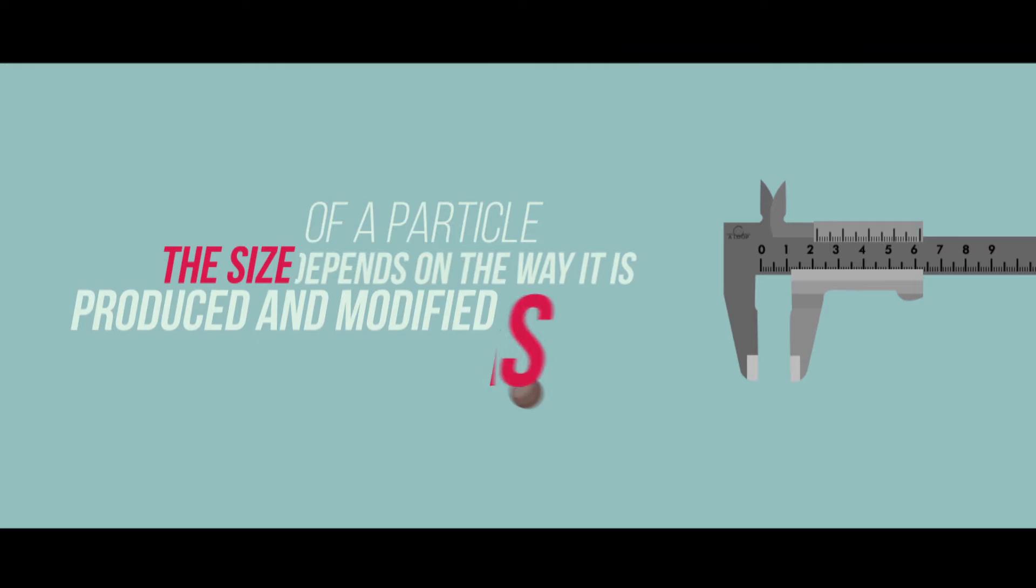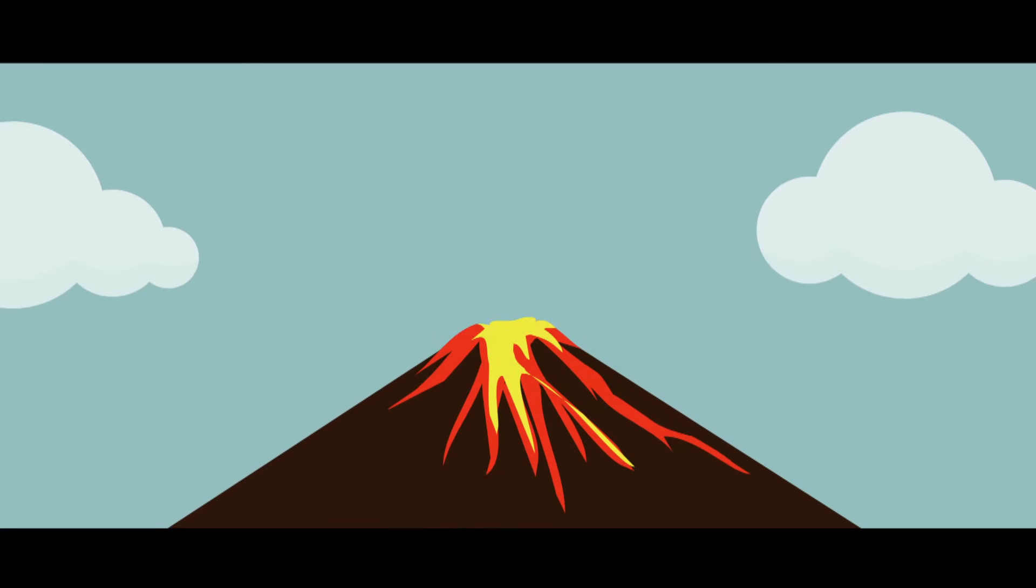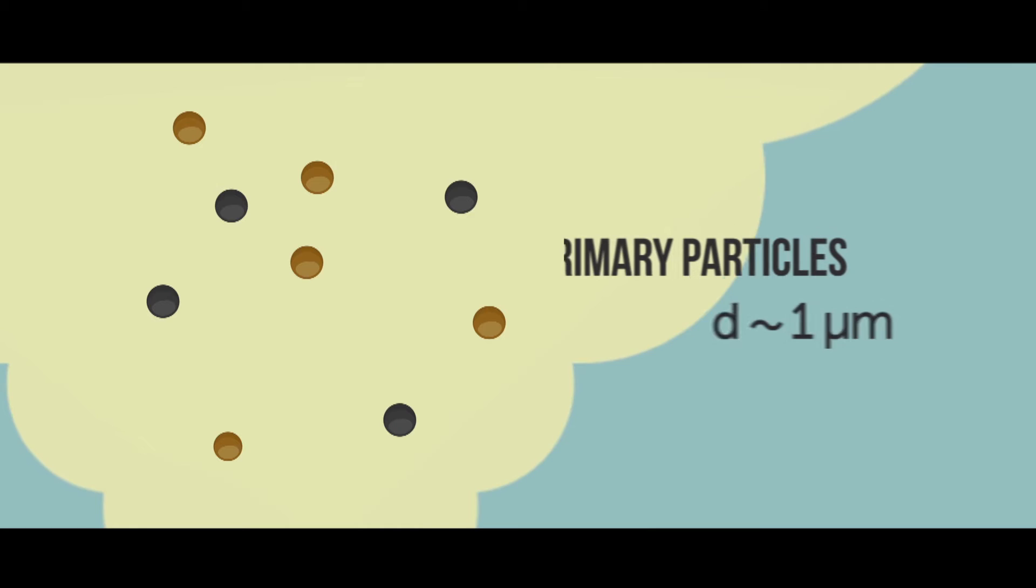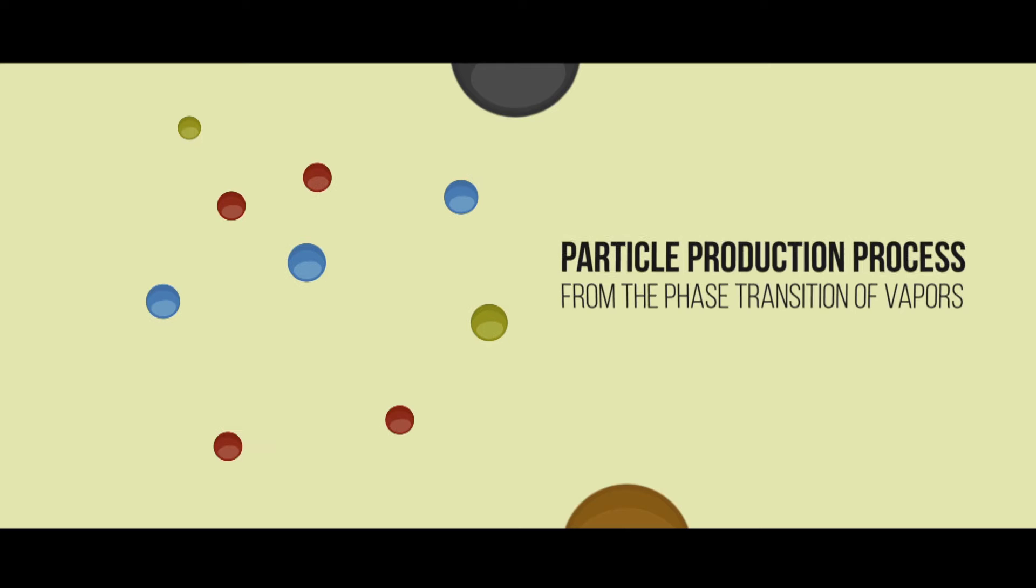In the atmosphere, aerosols can be produced from direct emission processes such as combustion. These particles are typically rather big, in the size range of microns. What we are primarily interested in is the particle production process from the phase transition of vapors.